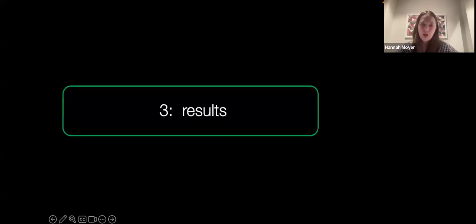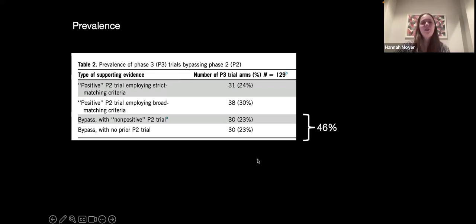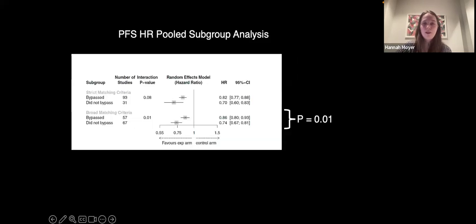So I'll finish briefly by sharing the results of this project. In this table, we show that 46% of the trials in our sample bypassed positive phase 2 evidence. So you can see that 23% of these trials were initiated after a phase 2 trial that was non-positive on its efficacy endpoint, and the other 23% were initiated without any phase 2 trial. So this practice is quite common in our sample and is happening almost half the time that phase 3 trials were started. So these results imply that the trajectory that we were all taught, where a phase 1 trial is run, followed by phase 2, and then followed by phase 3, might not actually align with reality.